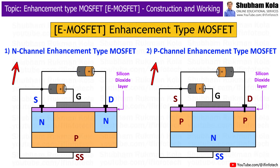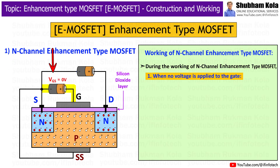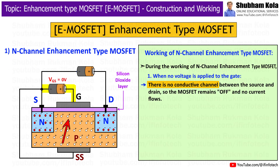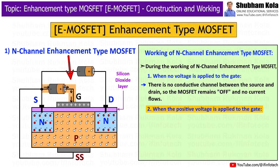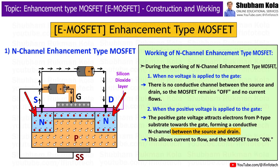Now that we have covered the construction, let's move on to the working principle of both N-channel and P-channel enhancement type MOSFETs. During the working of an N-channel enhancement type MOSFET, when no voltage is applied to the gate, there is no conductive channel between the source and drain, so the MOSFET remains off and no current flows. But when a positive voltage is applied to the gate, it attracts electrons from the P-type substrate towards the gate, forming a conductive N-channel between the source and drain, allowing current to flow and turning the MOSFET on.